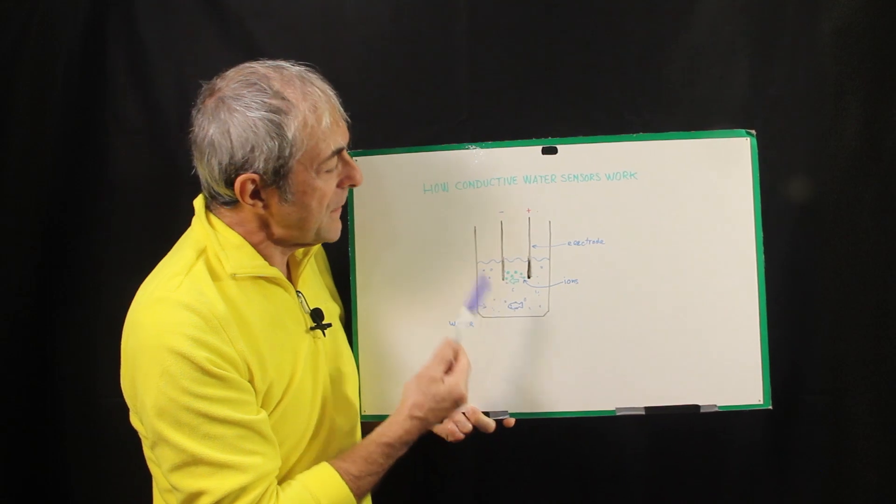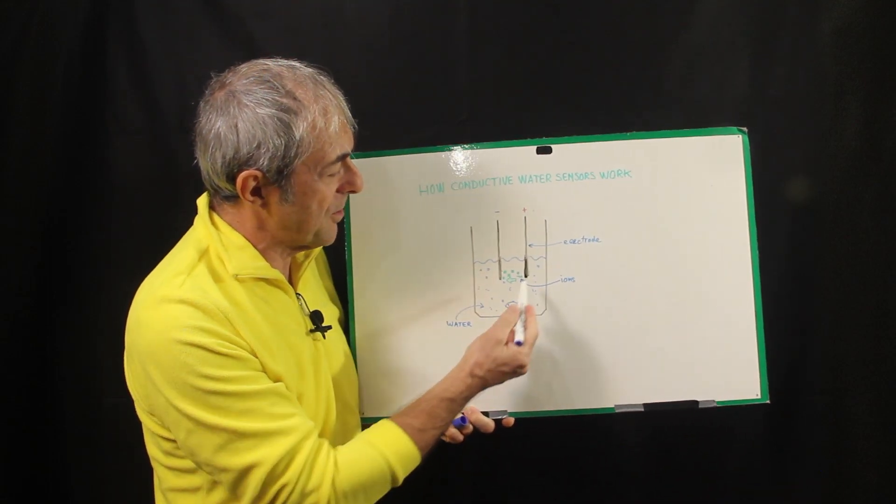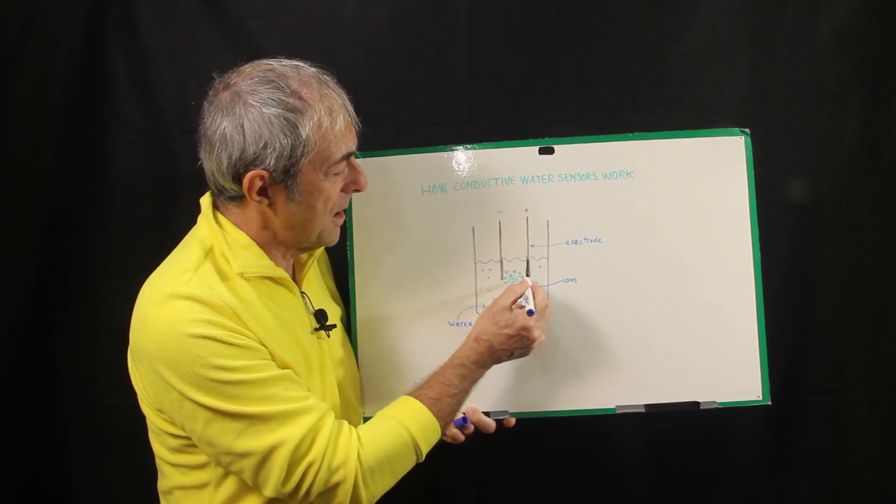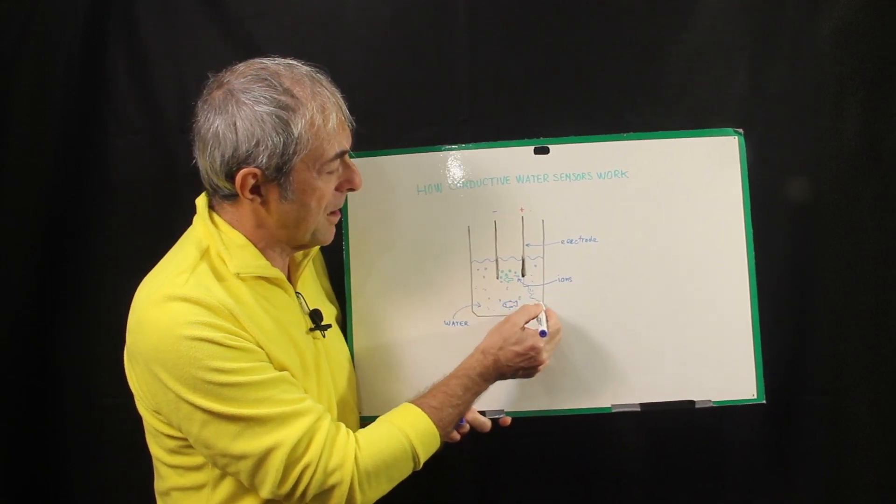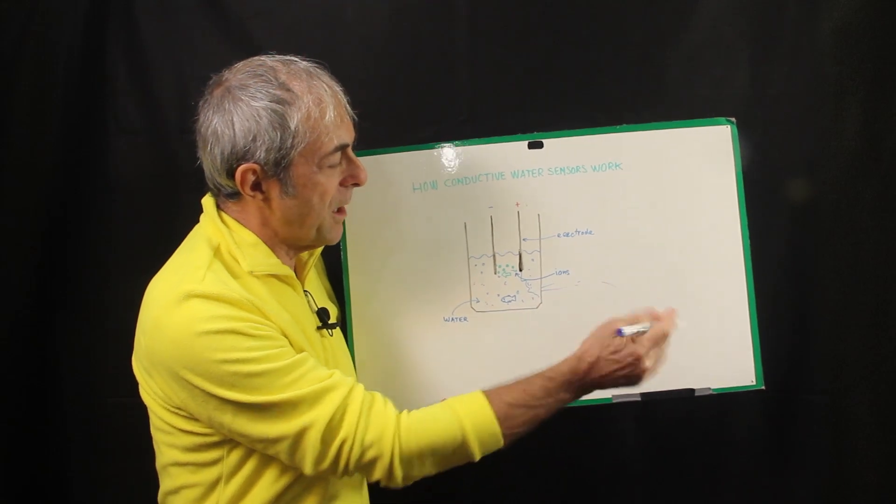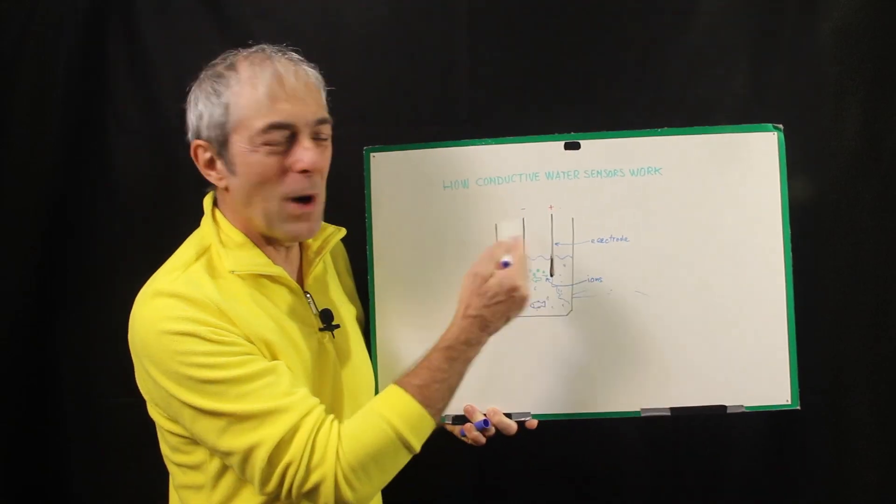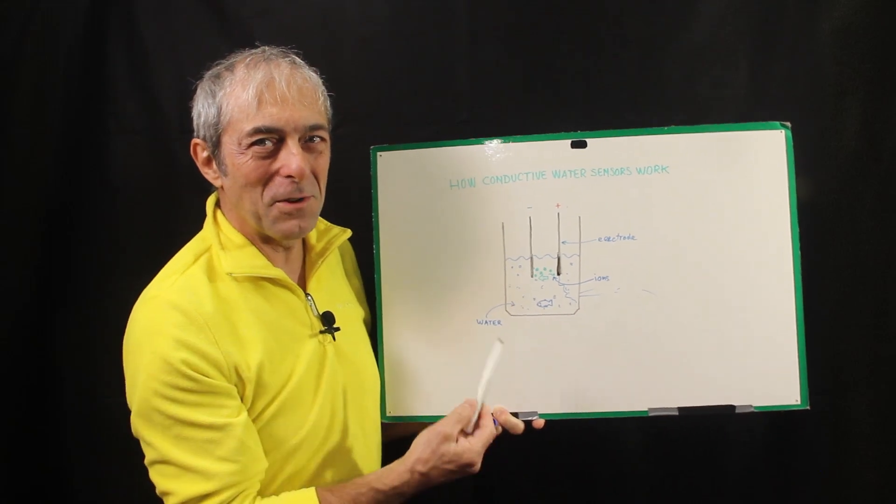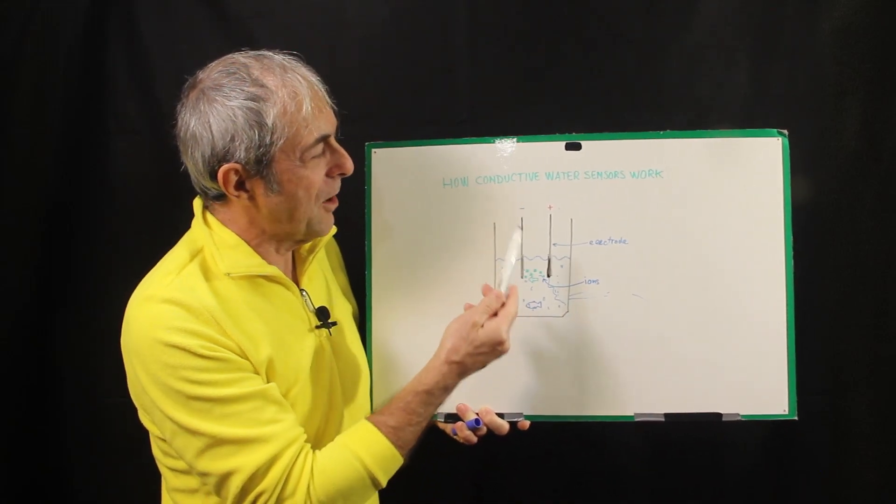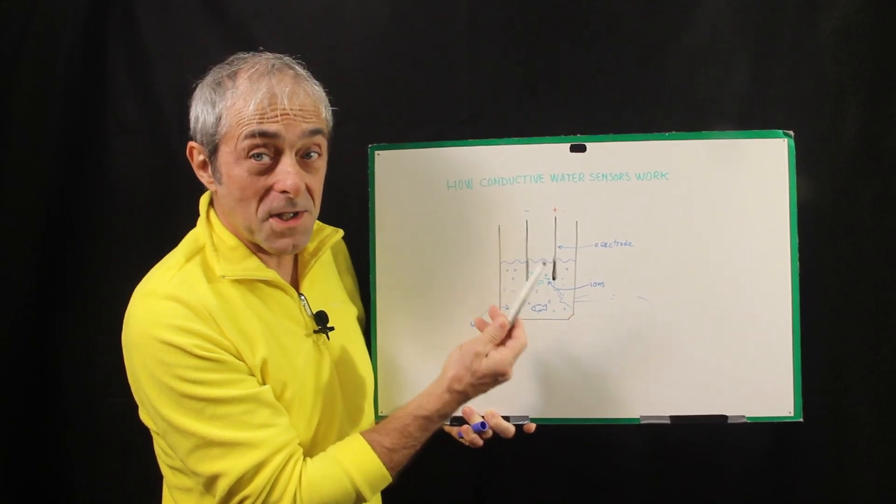And another problem that could arise from this kind of sensors is a leakage of current, maybe across the vessel or across pipes somewhere, and maybe back to another circuit. And this is why I'm not a fan of this kind of sensors. But of course they are cheap, easy to make and simple.